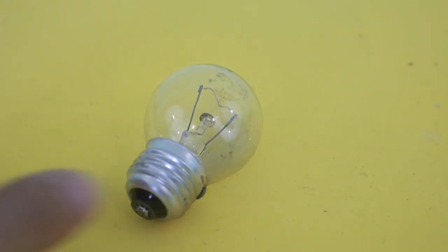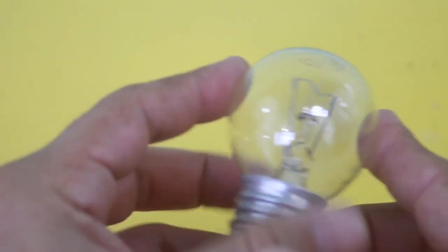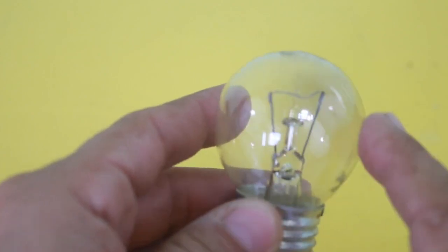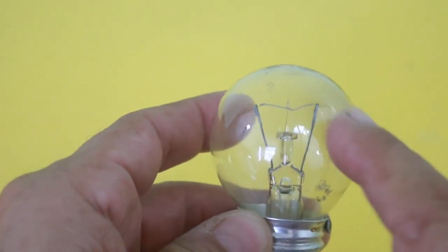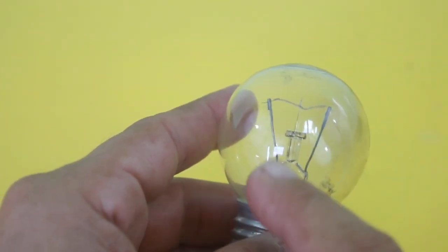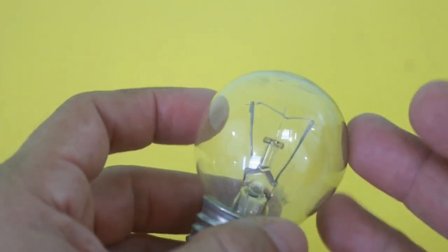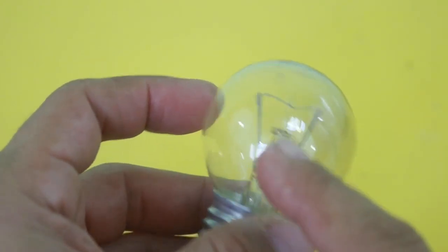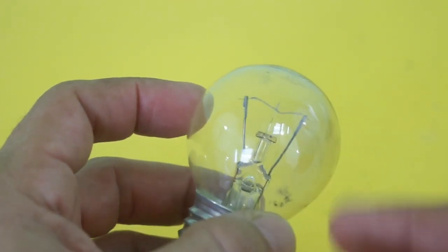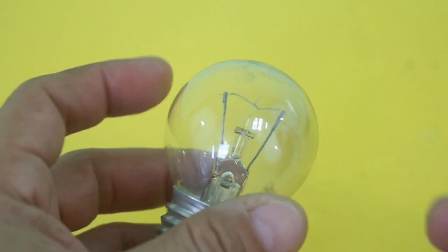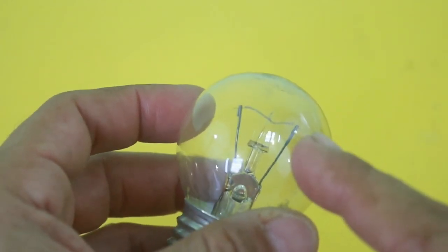The principle of operation is super simple. Inside the bulb we have a filament and we pass a current through this filament and it becomes very very hot. The current makes the filament glow, it becomes incandescent and emits light.